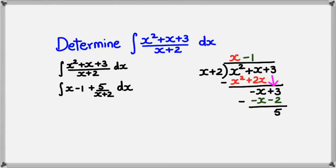So once again it's just simple procedure from this point onwards. It's just basic integration: x integrates to x squared over 2, minus 1 integrates to negative x, and 5 divided by x plus 2, well we know that 1 over x is ln of x when you integrate it, so we've got plus 5 ln of x plus 2.